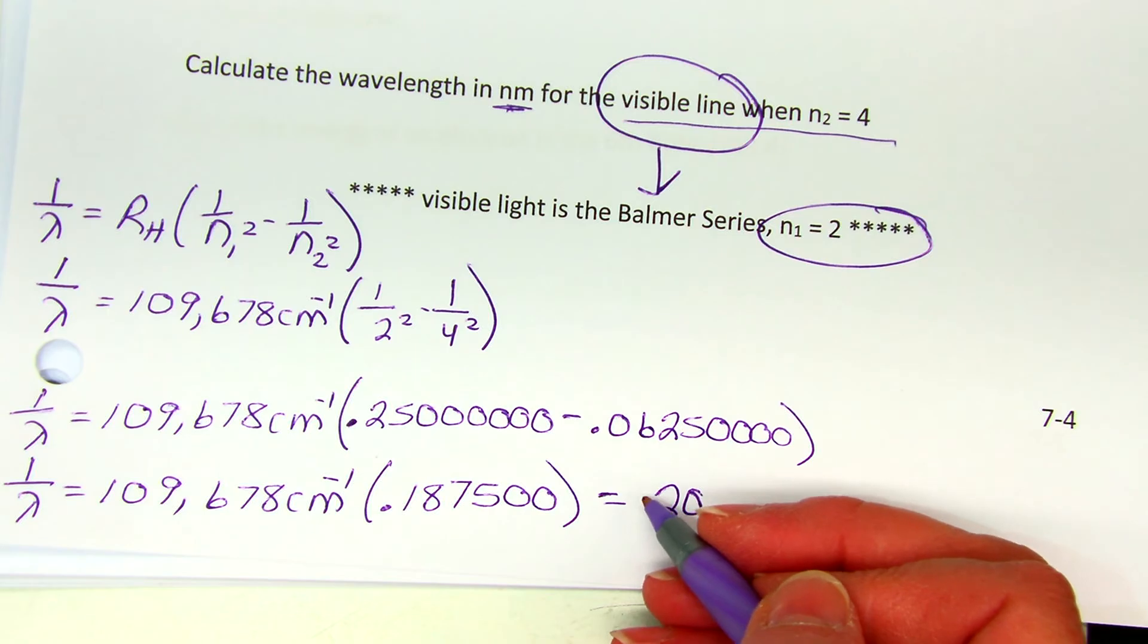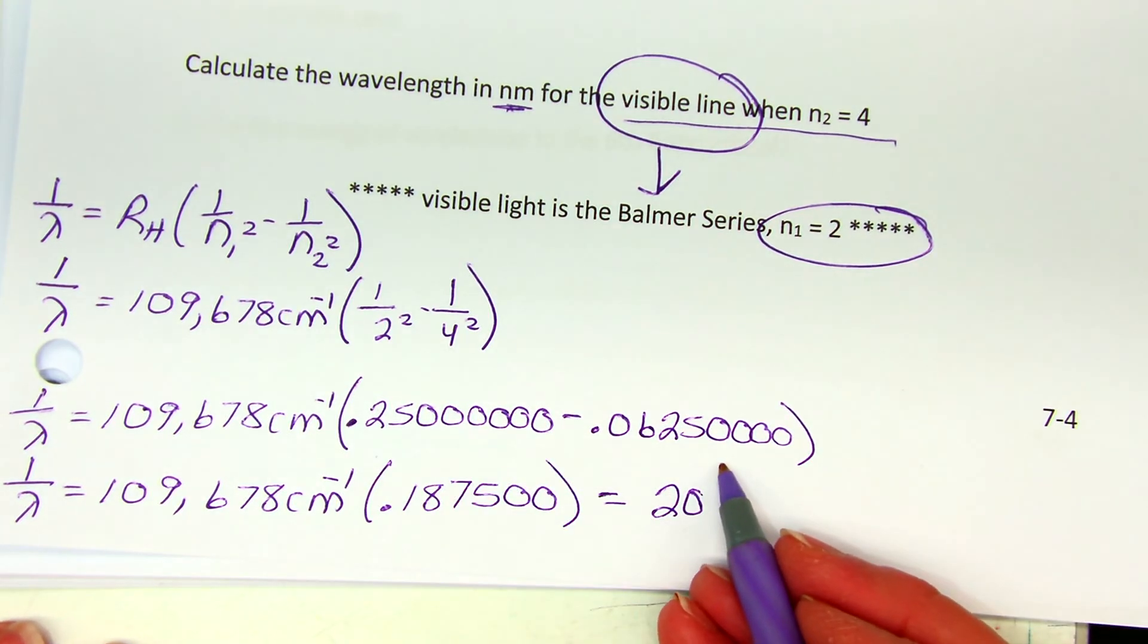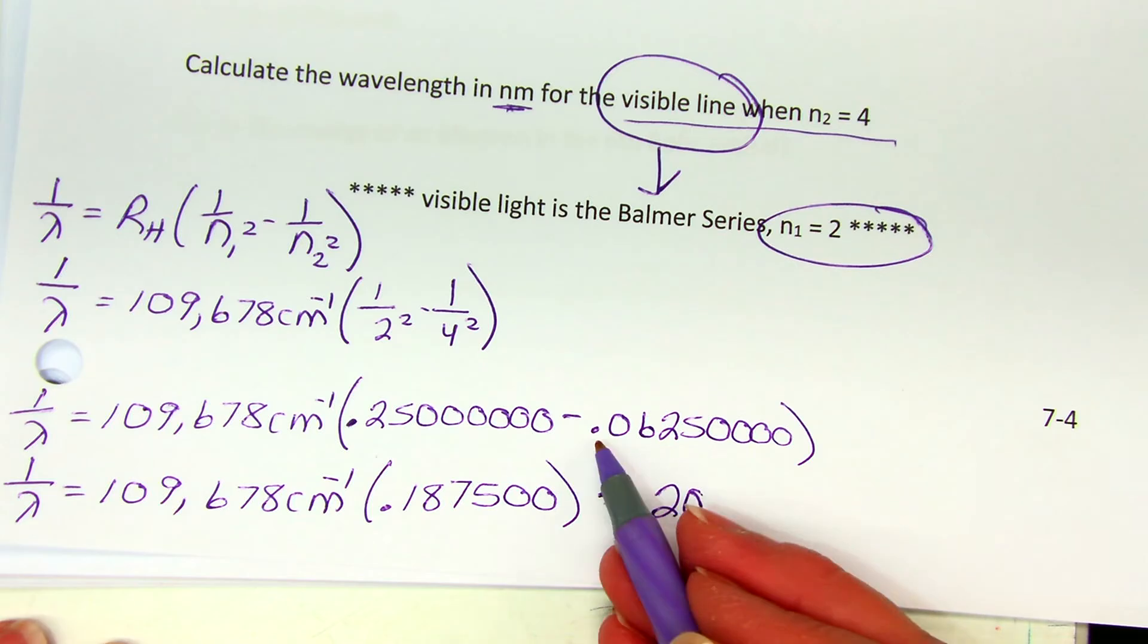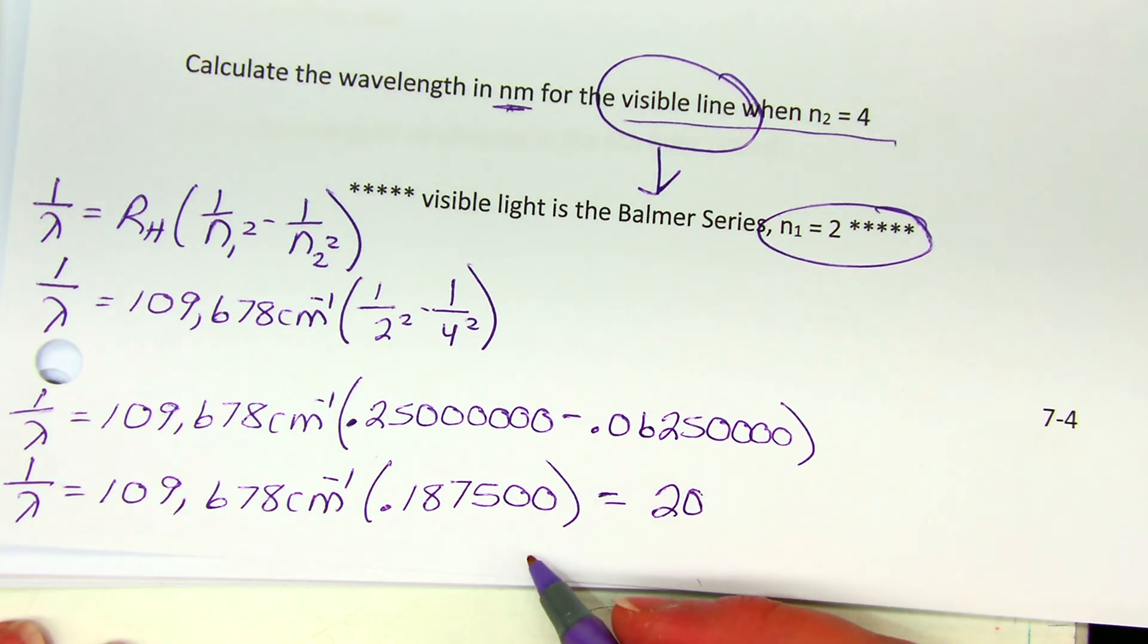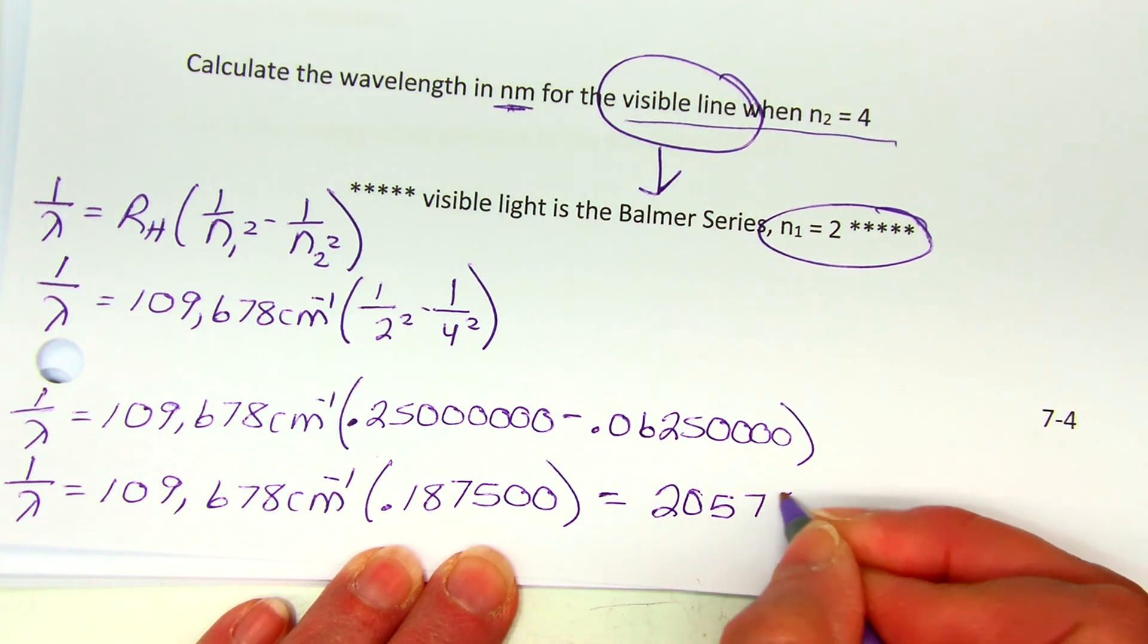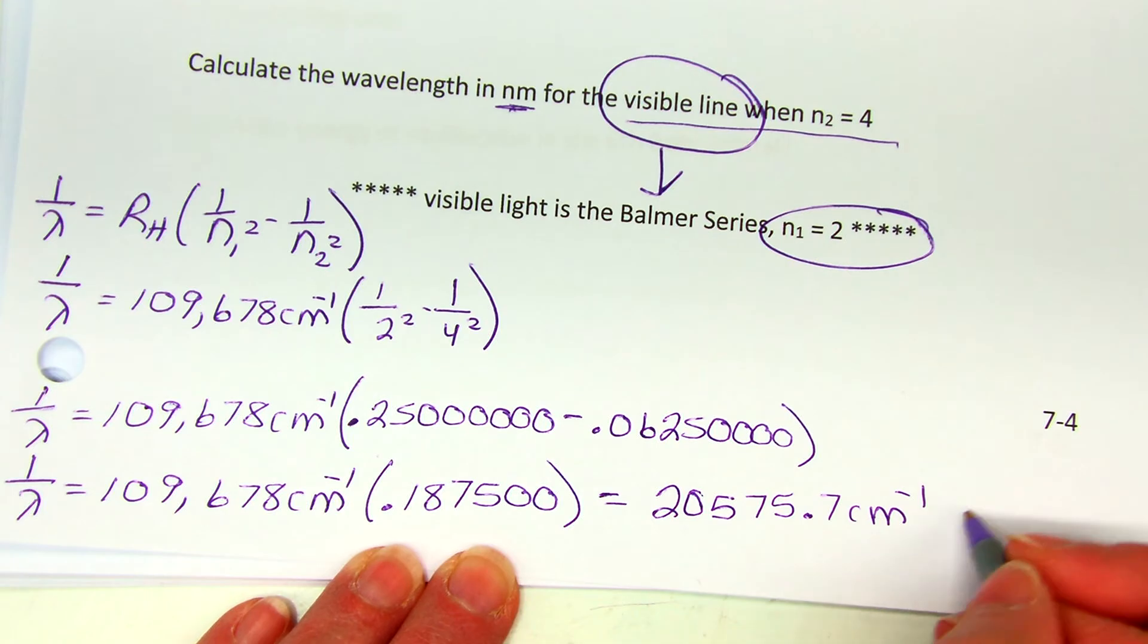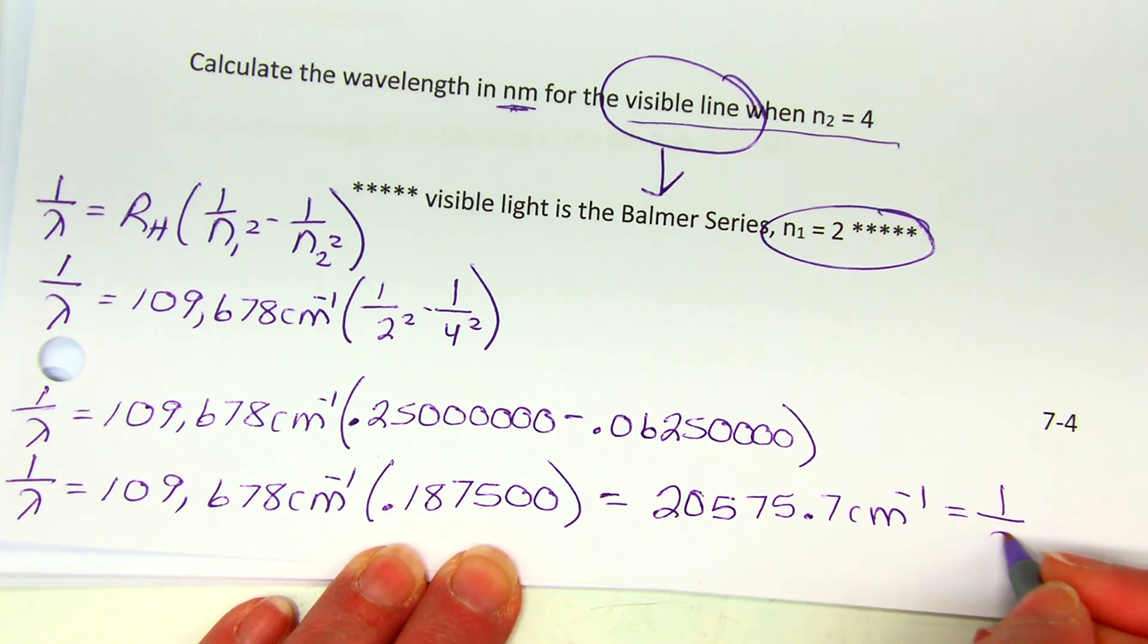It seems weird, I know we don't usually do that, but you can have as many as you need because these are exact numbers. I just wanted to make sure that when I was done subtracting I would have six. So we get 20,575.7 reciprocal centimeters.